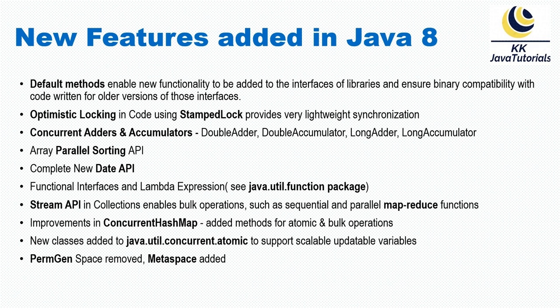When we talk about the array parallel sorting API — if you go to the java.util.Arrays class, you'll find a lot of sorting APIs added in JDK 1.8 for parallel sorting. You can make use of parallel processing when you have a huge amount of data to sort, which improves the performance of your application.